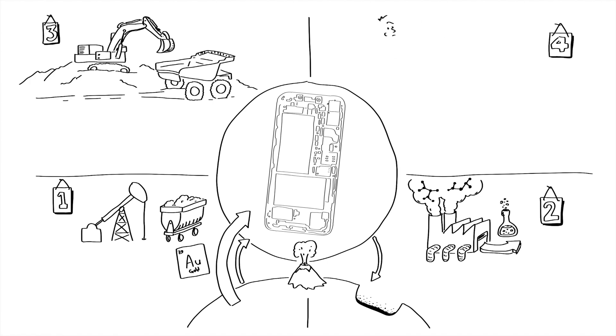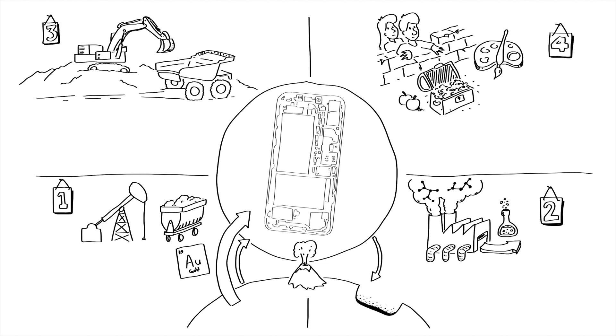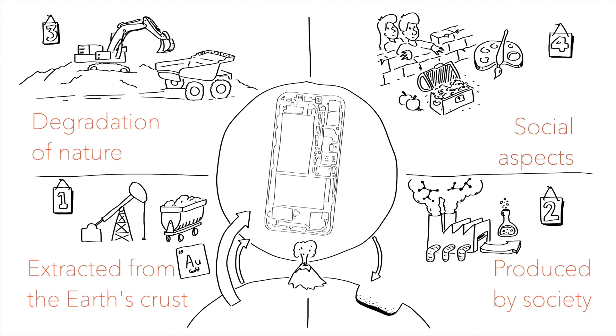Let's look at an iPhone using these four sustainability conditions that have been peer-reviewed over the past 30 years to see what this product has to comply with to be sustainable. We will look at what is extracted from the earth's crust, what is produced by society, what physically degrades nature, and finally the social aspects.